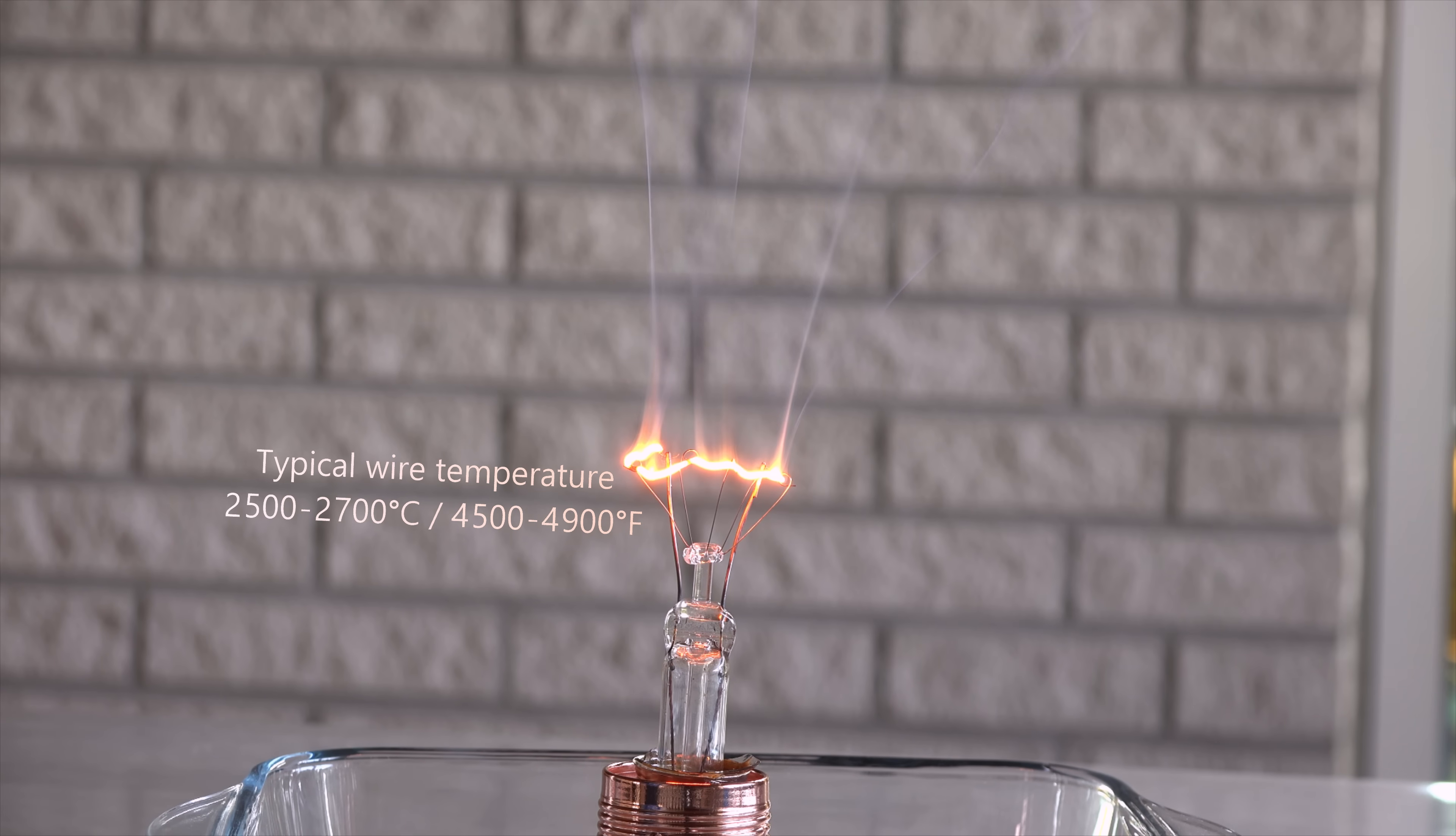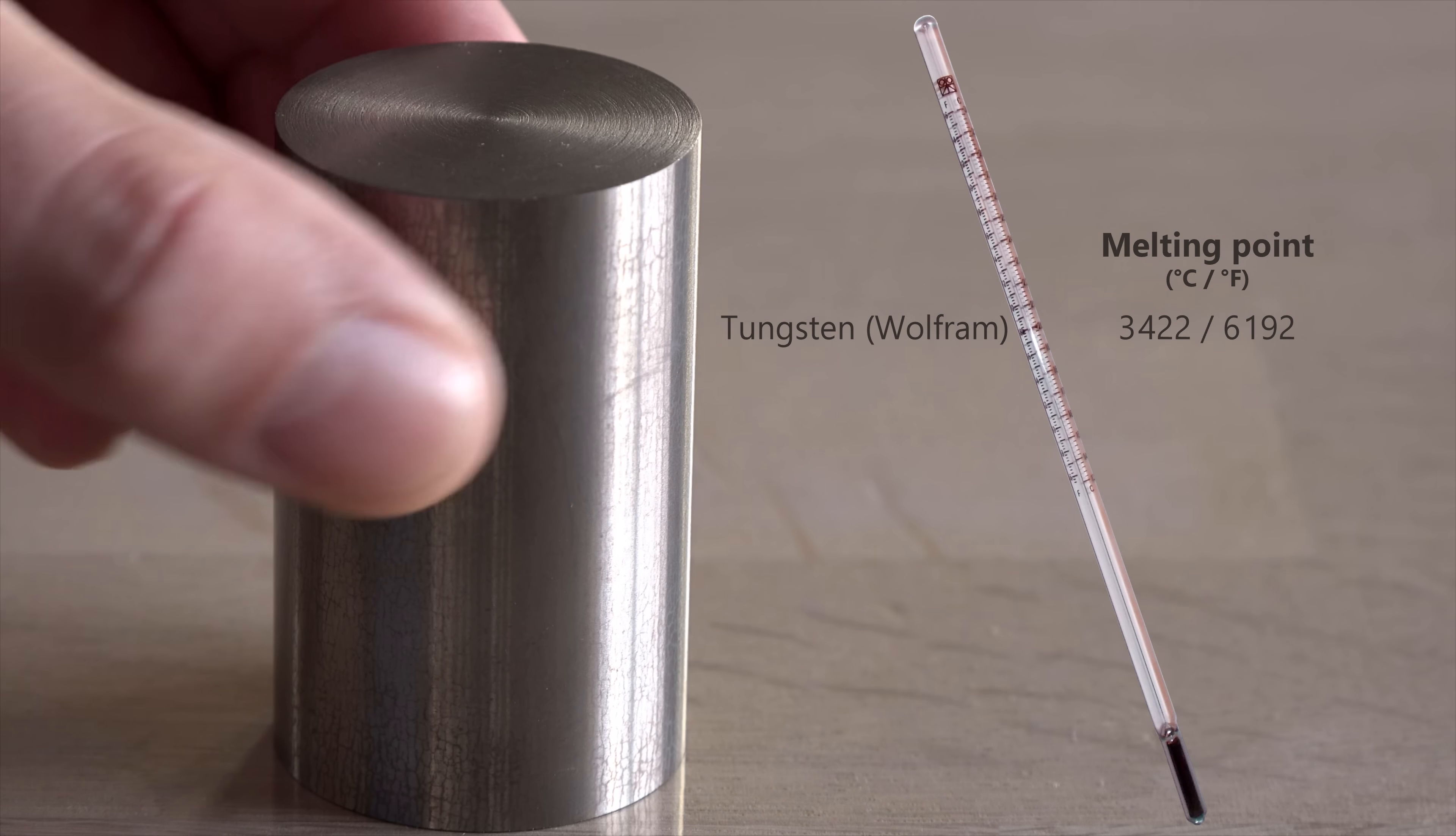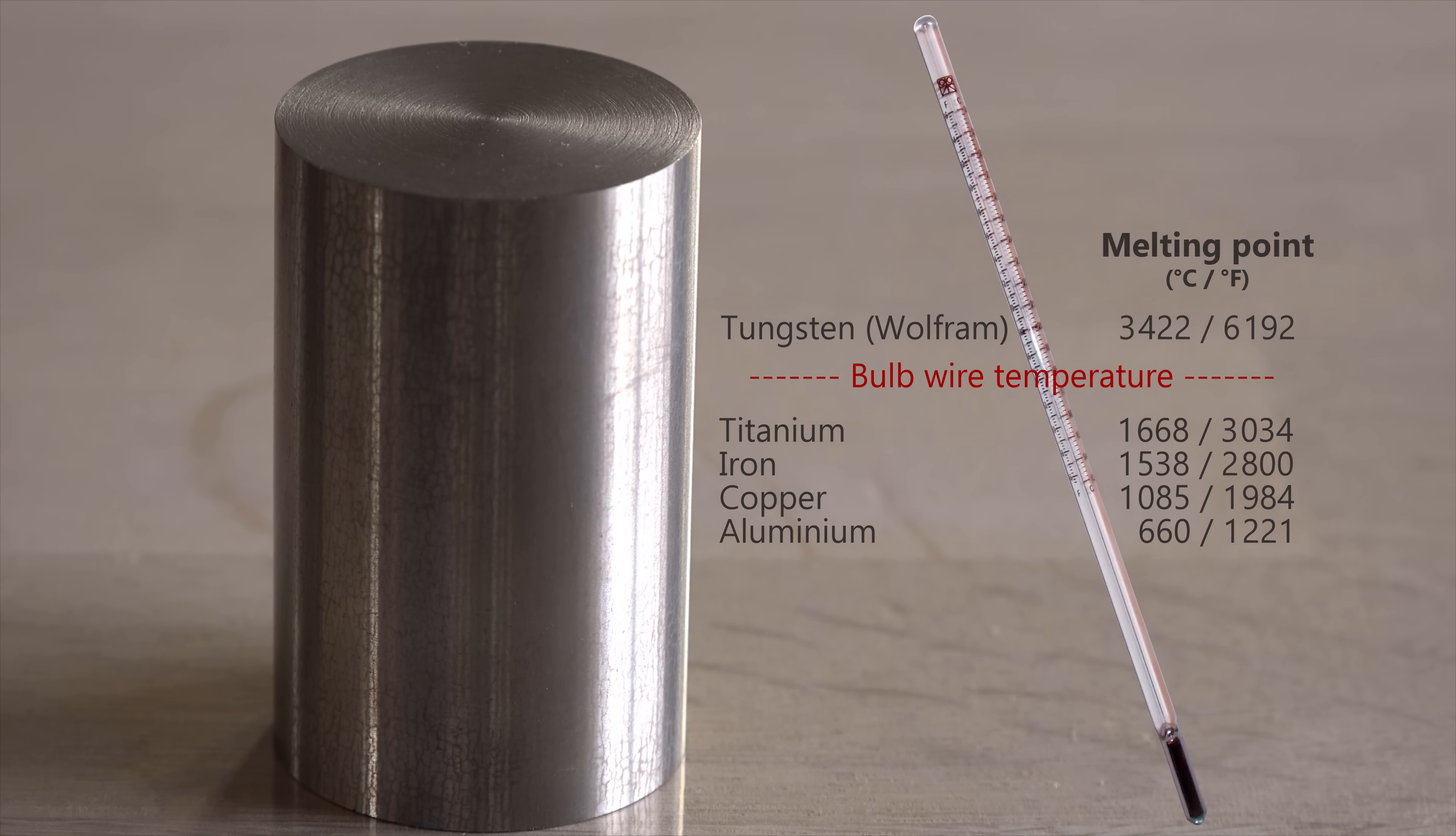The metal wire in an incandescent bulb is typically heated to thousands of degrees. It is therefore made of tungsten. Most metals would melt at this temperature.